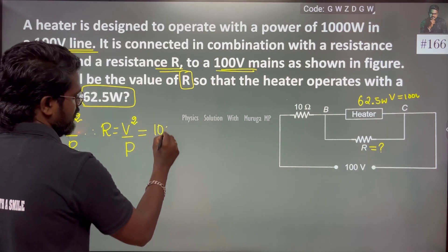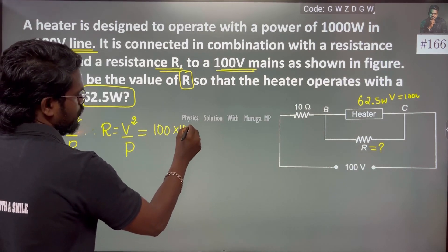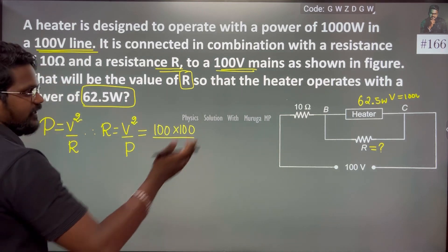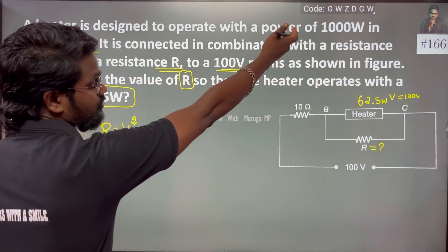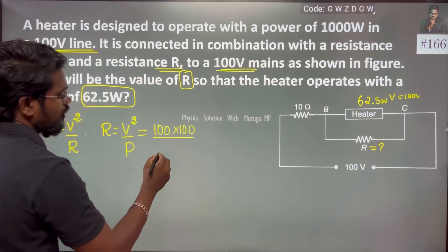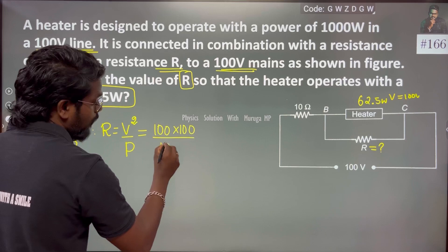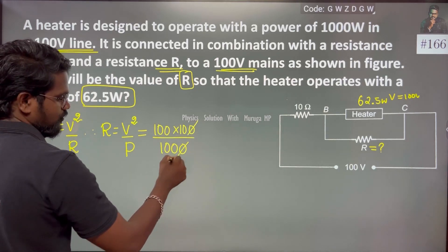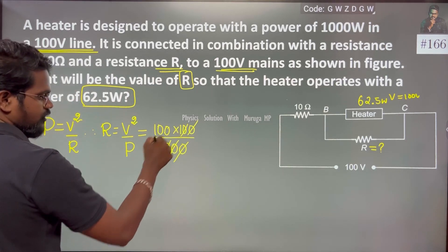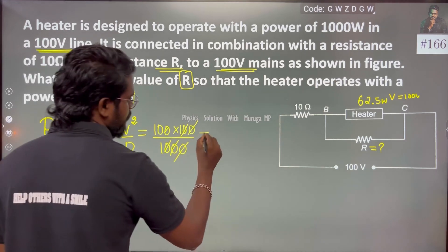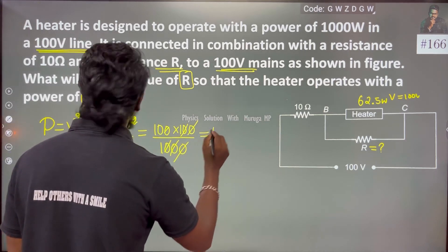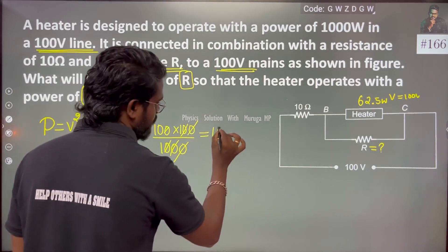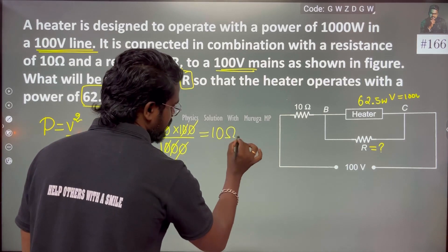The voltage is 100, so 100 squared divided by power — which is 1000. This gives the resistance of the heater as 10 Ohm.